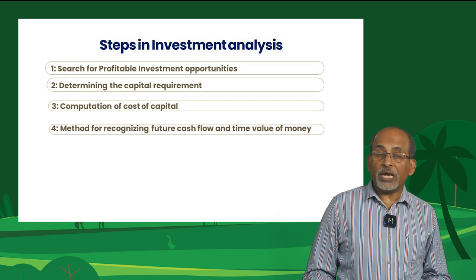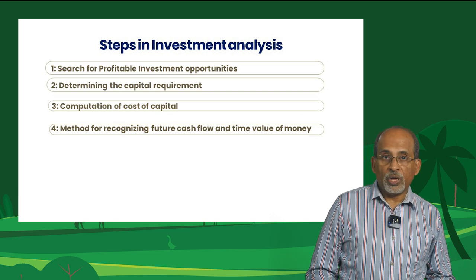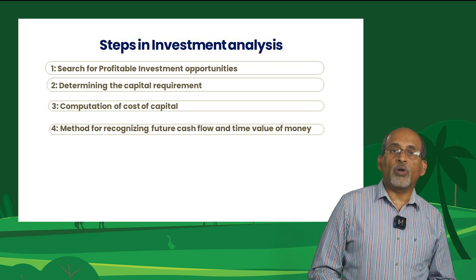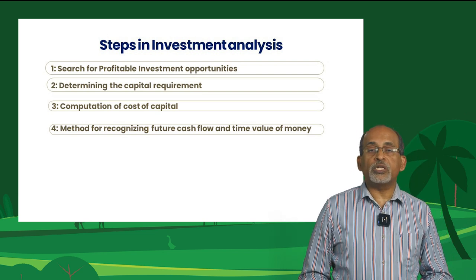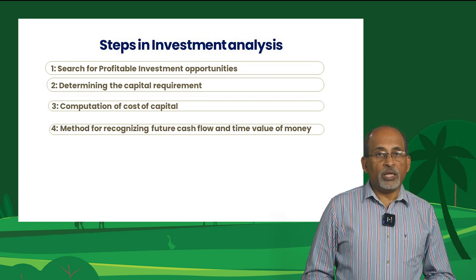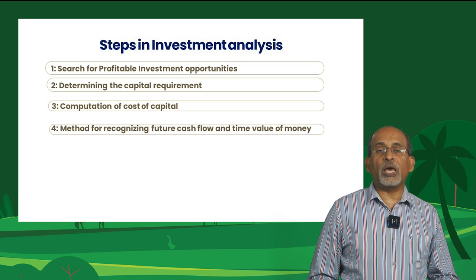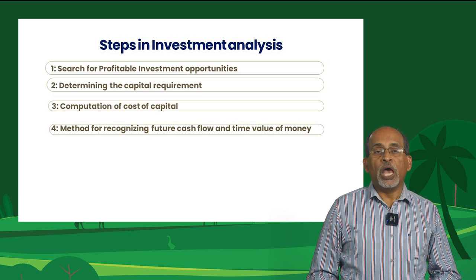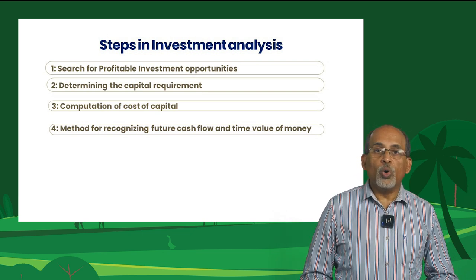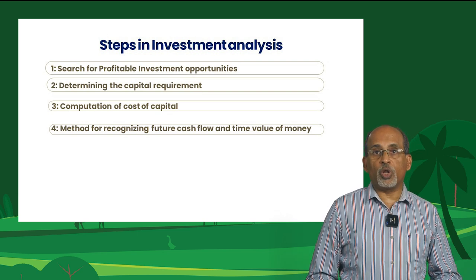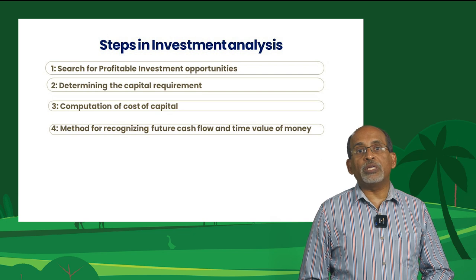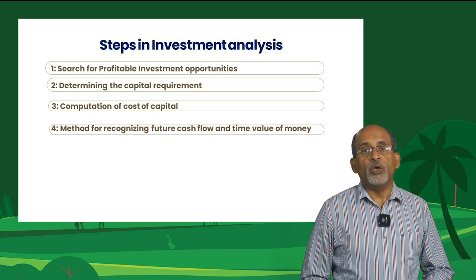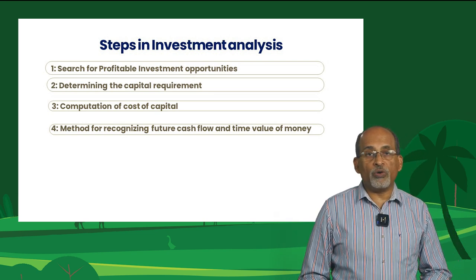Another opportunity is expansion of output through the addition of new enterprises. If you have a dairy unit and are planning to add a poultry unit, that is an example of expansion through new enterprises. The next requirement is determination of capital. The cost of initial investment and operational and maintenance costs over the economic lifespan of the investment constitute the capital investment. The next step is computation of cost of capital, which takes into account the availability of funds.